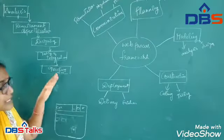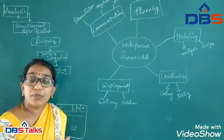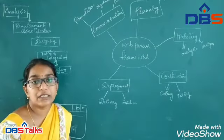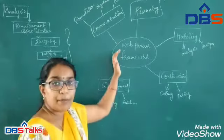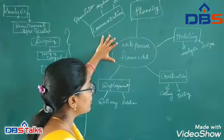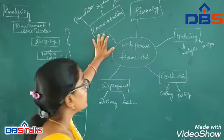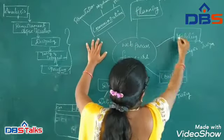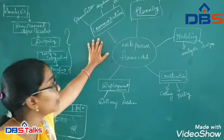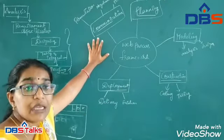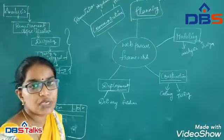The next phase is testing and integration, followed by the operating system check. This is the web process framework. Here we also have the same phases: communication, planning, modeling, construction, and deployment — same as in the waterfall or spiral model, but the tasks we perform in each phase are different.